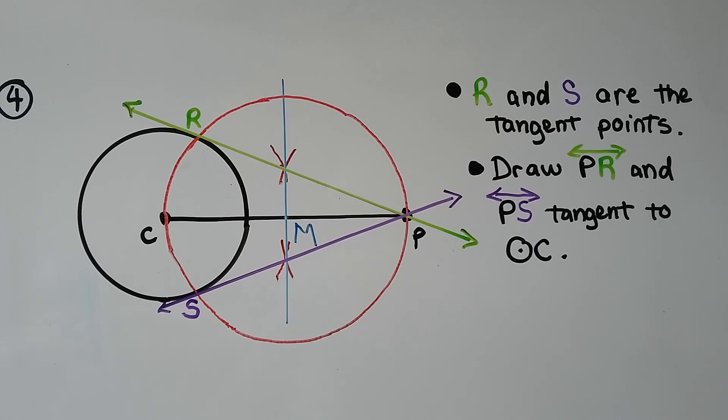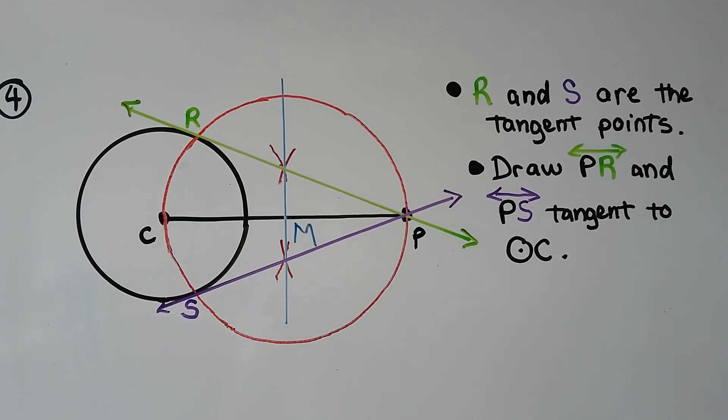So now we have constructed a tangent to a circle from an exterior point. Our exterior point was P, and these lines are tangent to circle C.